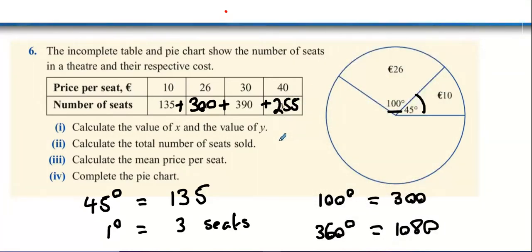Calculate the total number of seats sold. A thousand and 80. So guys, just to recap, the full circle is 360 degrees. And we figured out earlier that one degree equals three seats. That's why we multiply the 360 by three to get a thousand and 80 in total, for an entire amount of people. Now, the mean price per seat. This is going to be total costs divided by total seats. Has anybody got that?